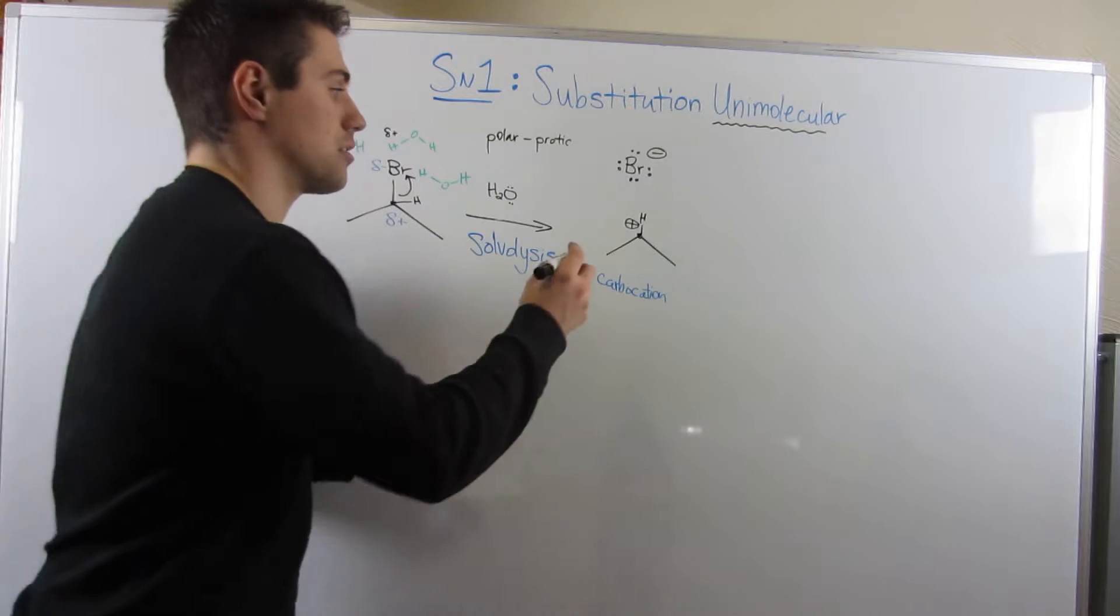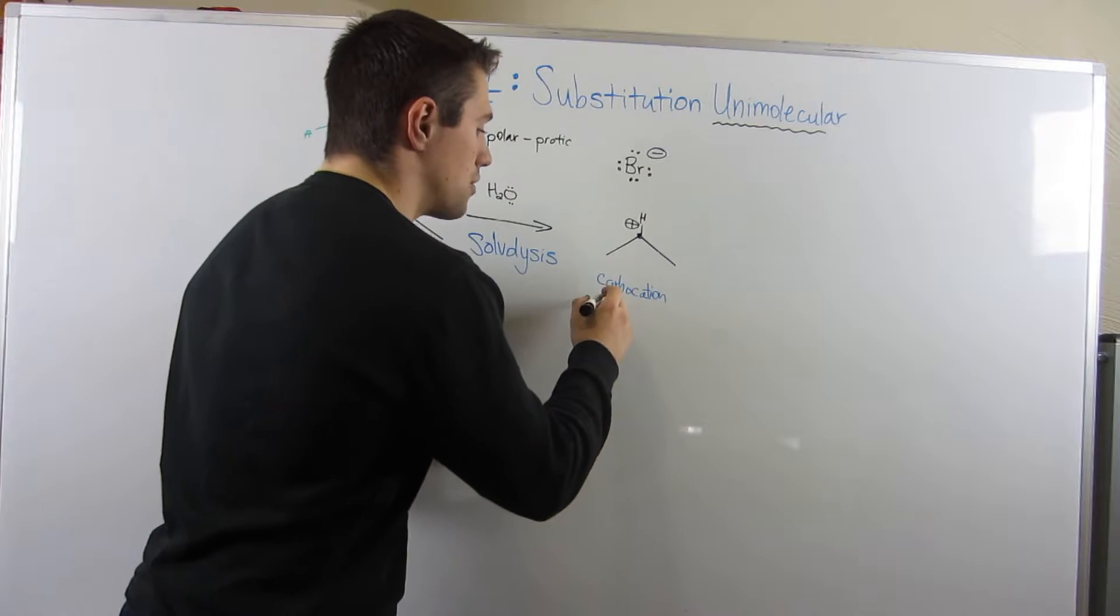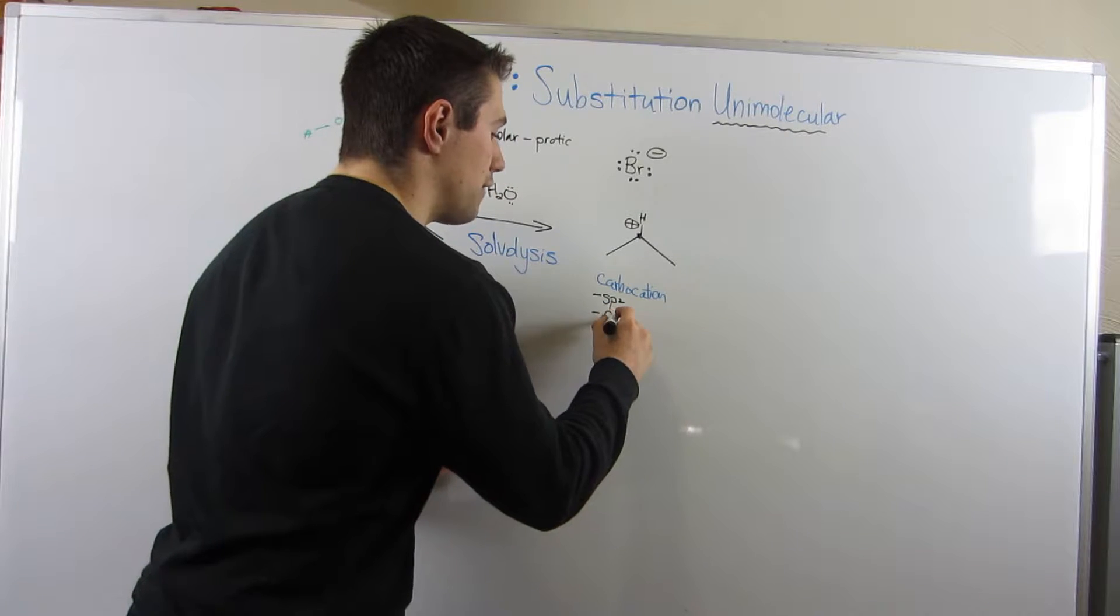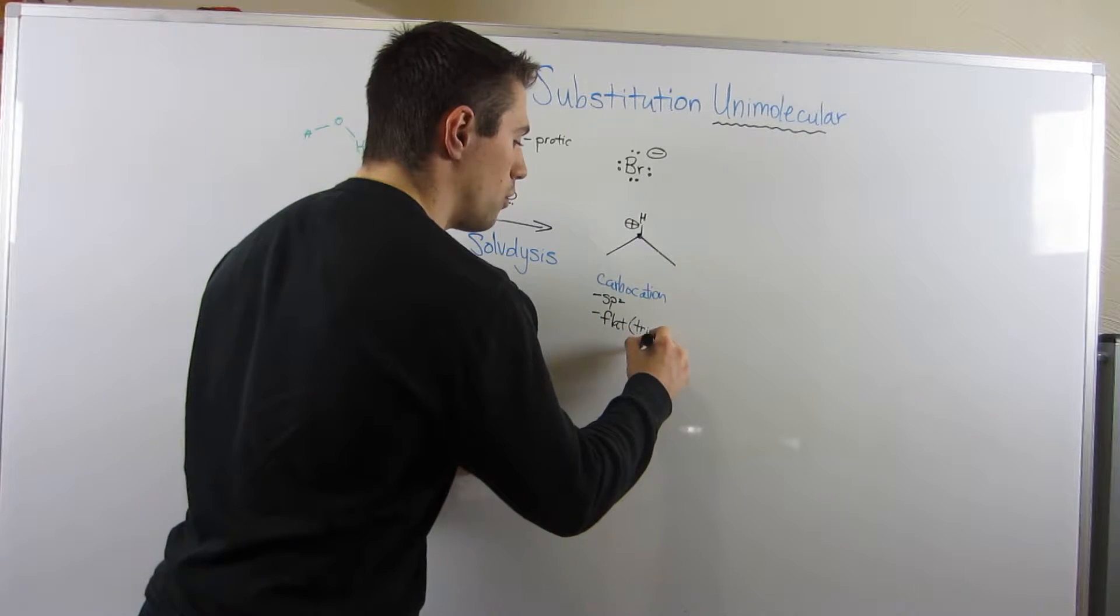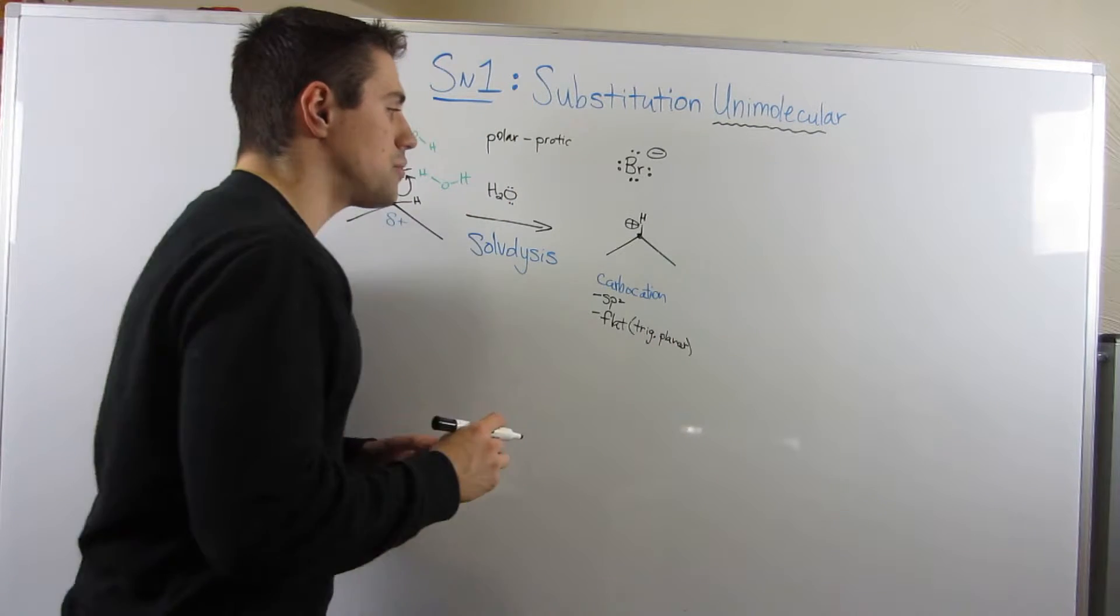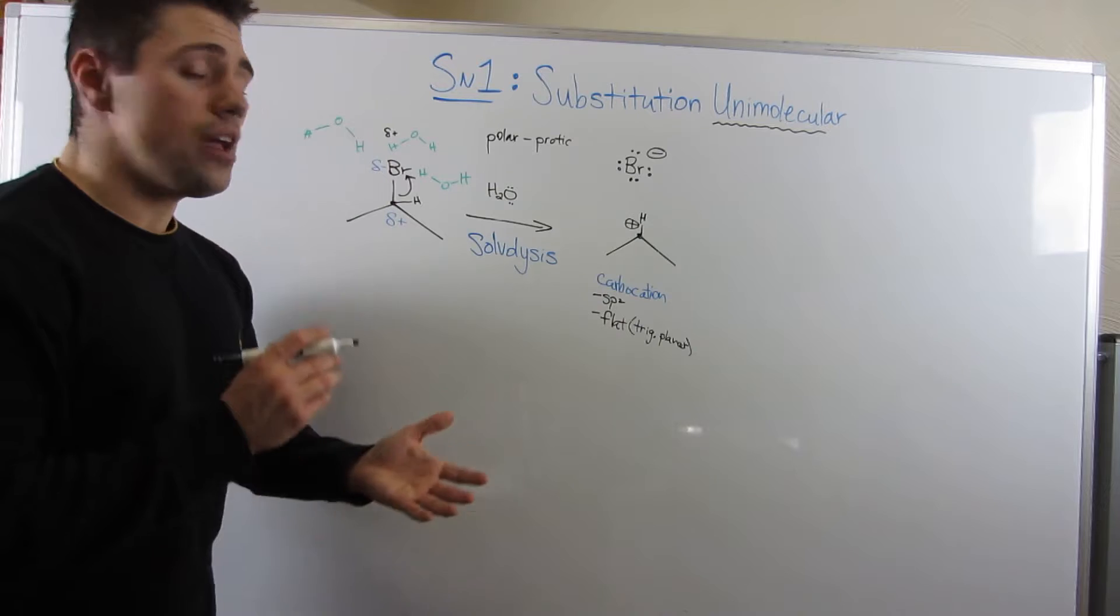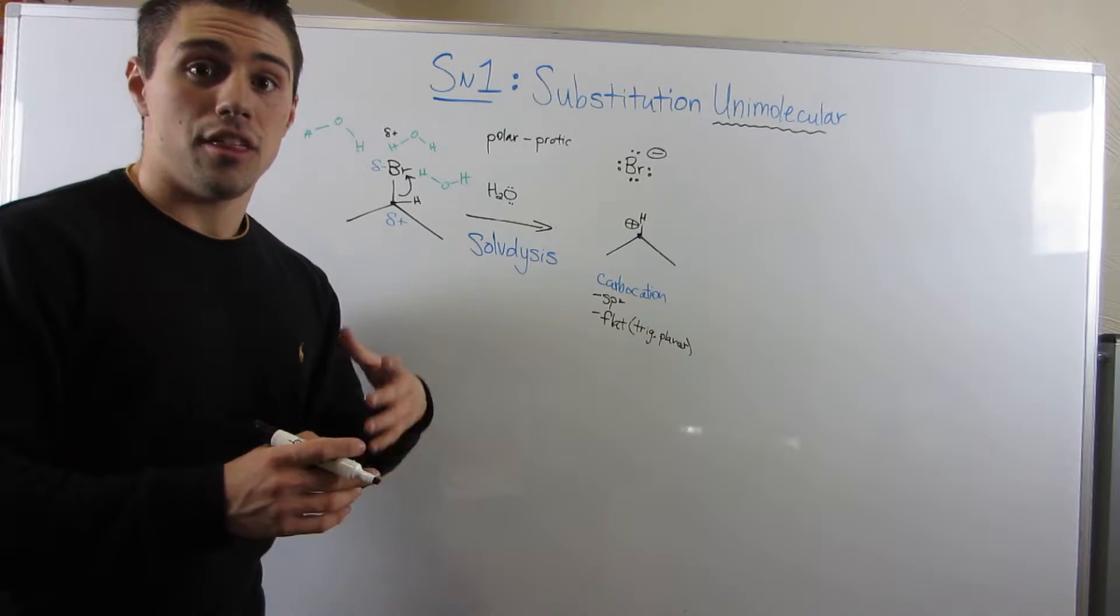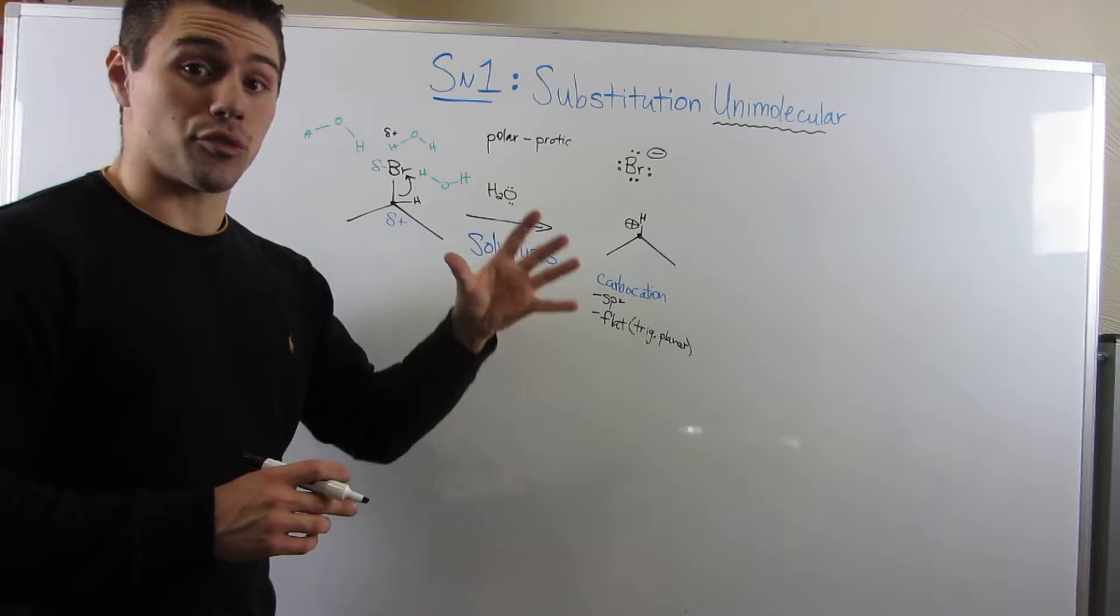So some things about carbocations. There's three bonding areas, right? One, two, three. So they are sp2 hybridized, which means they are flat, a.k.a. trigonal planar. So now that we have this positive charge, I'm going to tell you right now, carbocations, extremely reactive. You don't stick around like this forever.